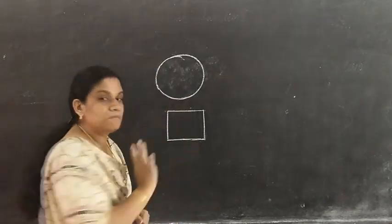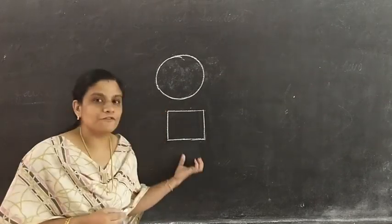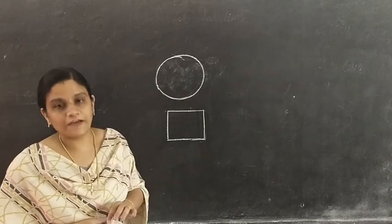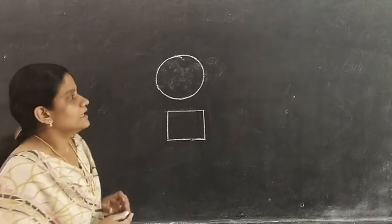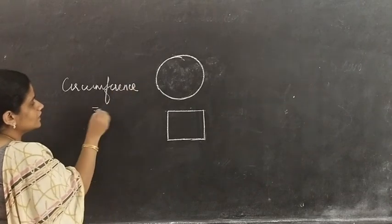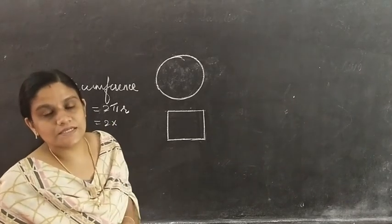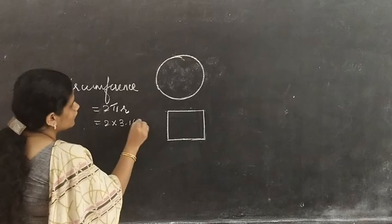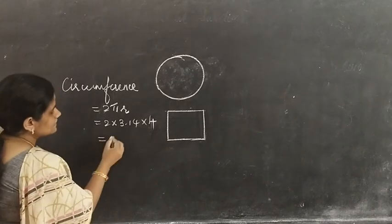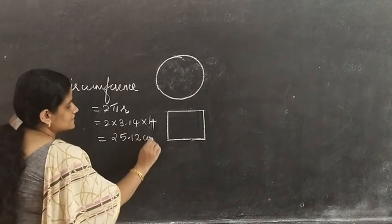If the perimeter is the same, there will not be any cord left. But if the perimeter is different, we have to see how much is left. The first shape is a circle with radius equal to 4 cm. Circumference equals 2 pi r, that is 2 into 3.14 into 4, which gives 25.12 centimetres.